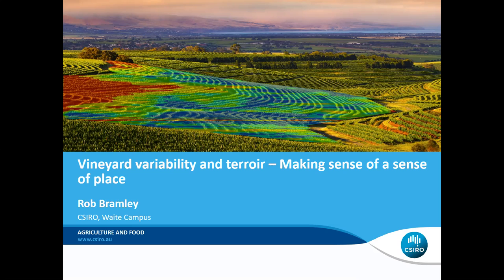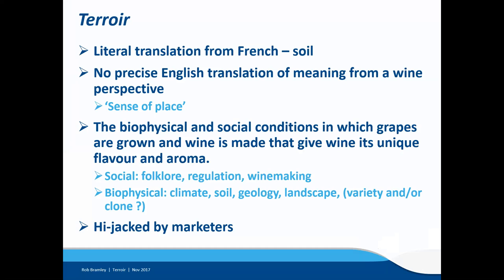As most people would know, there are a range of different definitions of terroir. Its literal translation from the French is simply soil, but in a wine context it generally means much more than that. Getting an English definition of what it actually means is difficult because there's no precise English translation in terms of wine. Perhaps the best one — attributable to Jamie Good — is the phrase 'sense of place' to convey what is meant by terroir. In essence, it's the summation of the various biophysical and social conditions in which grapes are grown and wine is made that give that wine its unique flavour and aroma.